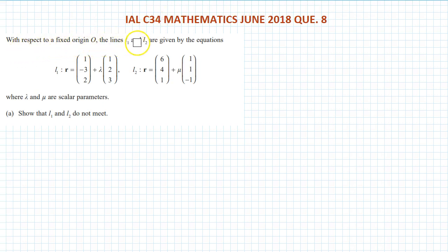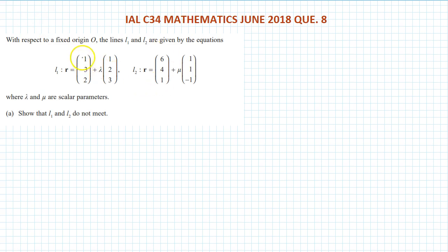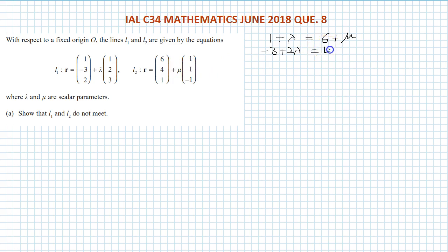Question number 8: with respect to a fixed origin, lines L1 and L2 are given by equations with position vectors, directional vectors, and scalar parameters lambda and mu. We need to show that L1 and L2 do not meet. To test intersection, we set up equations for the i, j, and k components: 1 plus lambda equals 6 plus mu, and minus 3 plus 2 lambda equals 4 plus mu.